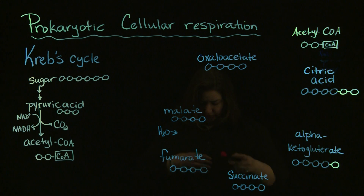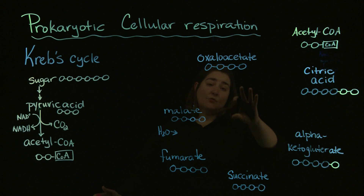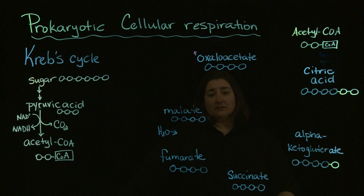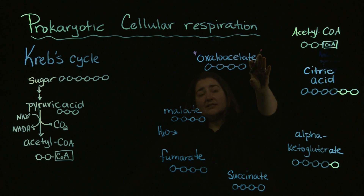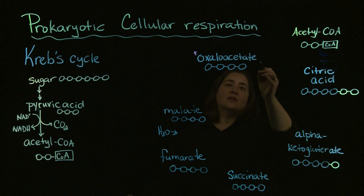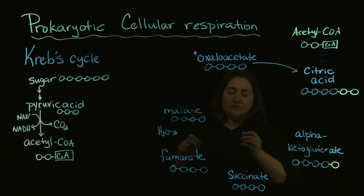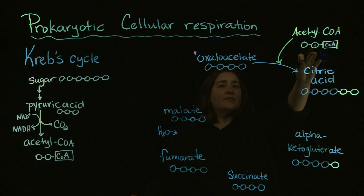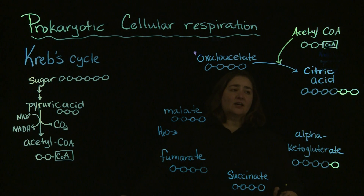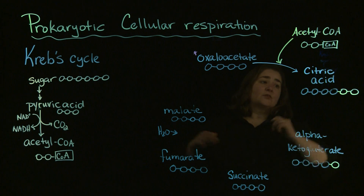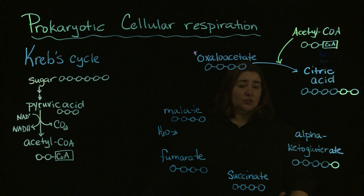As far as the Krebs cycle goes, I have a couple of terms I want you to be familiar with. One of those terms is oxaloacetate. You can think of oxaloacetate as hanging out in the Krebs cycle, waiting for acetyl-CoA. When acetyl-CoA enters our Krebs cycle, those two carbons are attached to the oxaloacetate to generate our citric acid. So citric acid is what we are going to start with in the Krebs cycle.